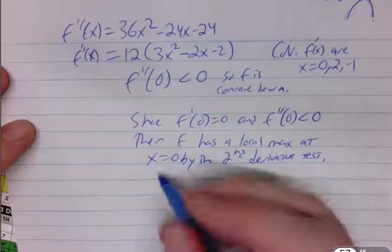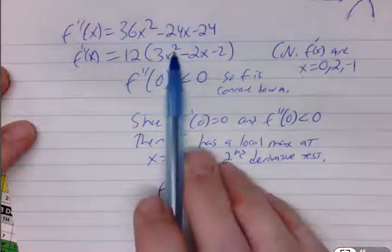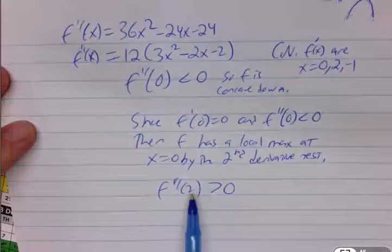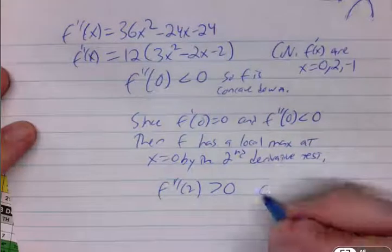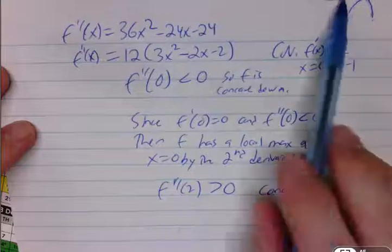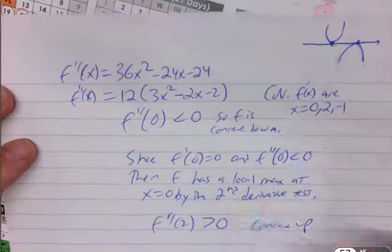How about the other ones? f double prime of 2. Okay, so that's 12-ish minus 4 is 8, minus 2 is positive, so that's all positive. So if my second derivative is positive, that means concave up at a critical value, so that's going to give me a local minimum. Local minimum, which we could confirm from the other one, from the other work.